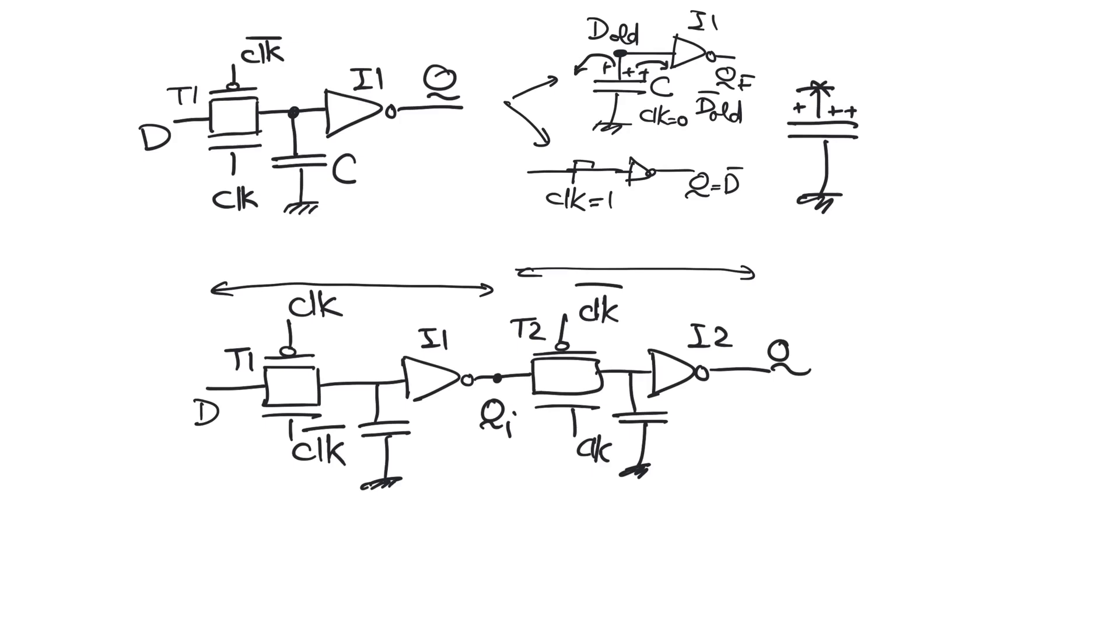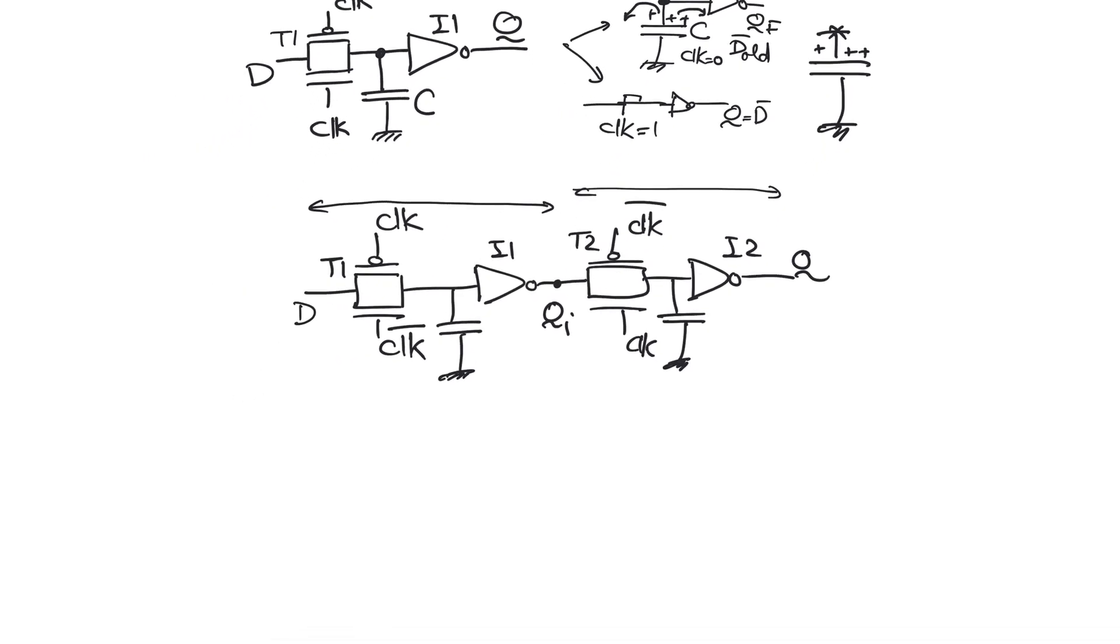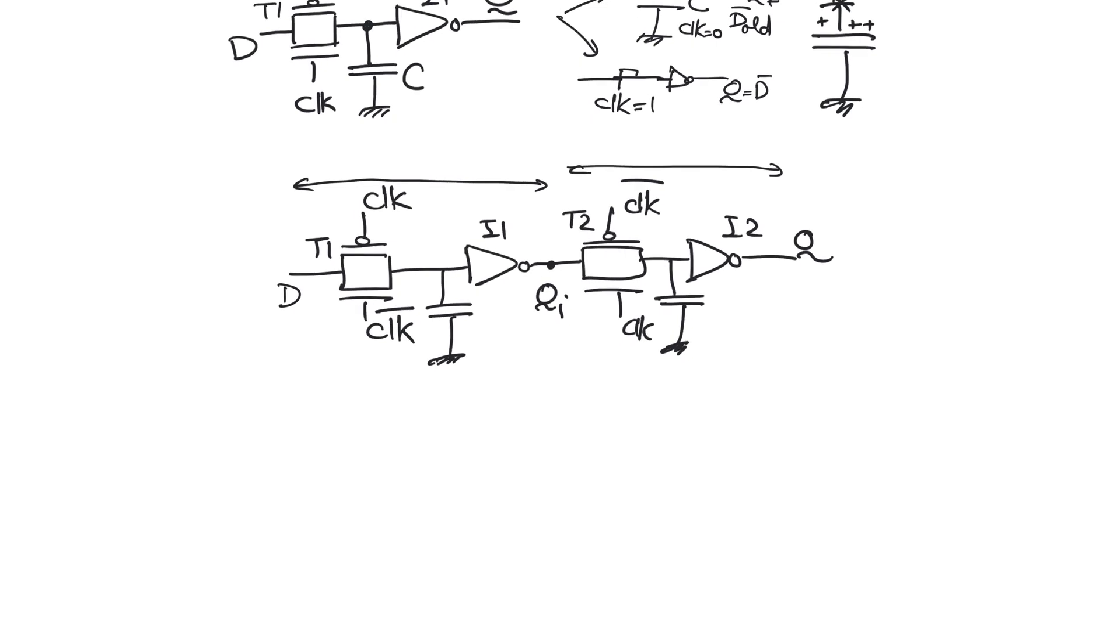Now let's calculate the setup time, the t-c-q and t-hold for the dynamic register. The definition of setup time was the amount of time before the active edge that D has to stabilize. So in the static latch that necessitated that we let the input settle in the master latch before transmission gate T1 closed. This is again the situation here when clock goes up to one. The transmission gate T1 will cut D from the rest of the circuit and so we must be sure that the value of D we want to register is stable before the edge.